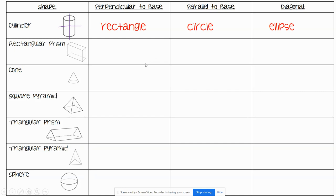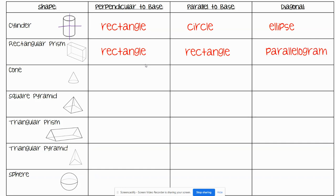For a rectangular prism cut perpendicular to its base, you are going to get a rectangle. Parallel to its base is another rectangle, and diagonally is a parallelogram. For a cone cut perpendicular to its base — so straight up and down — you're going to get a triangle. Parallel to the base gives you the shape of the base, which is a circle.